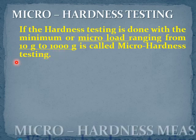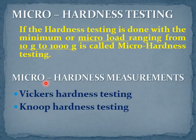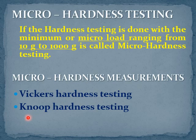Generally, the micro hardness measurement is done by two testing methods: Vickers hardness testing and Knoop hardness testing.